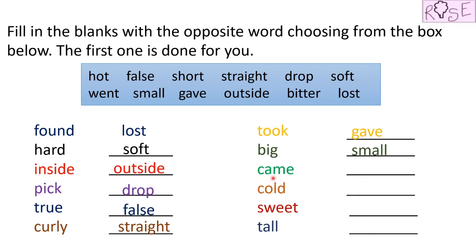Next word is came. He came late. The opposite of came will be went. And where is it in the box? Here it is — went. The next word is cold. The ice cream is very cold. If ice cream is cold, what will the coffee be? Coffee will be hot. So the opposite of cold is hot.